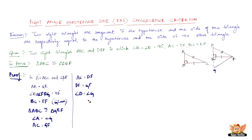And then we have angle D equals angle G. Why is this? Because angles opposite to equal sides are equal — angle D and angle G are equal because DF and GF are equal. So from this we get angle A equal to angle D, because we proved angle A equals angle G, and angle G equals angle D, therefore angle A equals angle D.